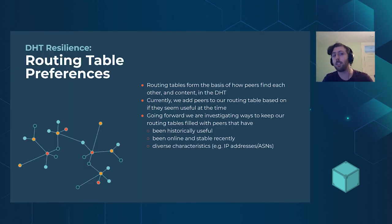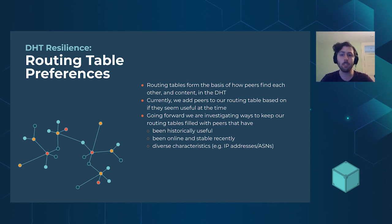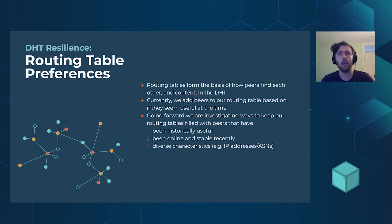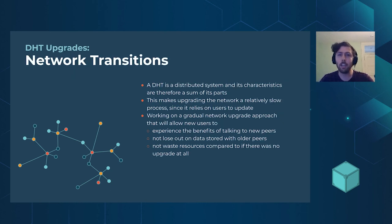Going forward we have DHT resilience improvements. Routing tables tell you which peers to interact with as you crawl the DHT network to find information. We want better ways to keep peers that have been historically useful, that are currently online and have been stable for the last couple hours, and that have diverse characteristics so we're not affected by one area of the network having trouble.